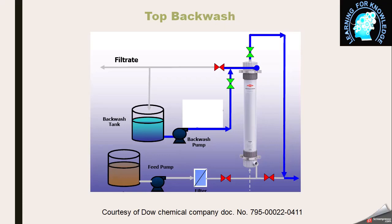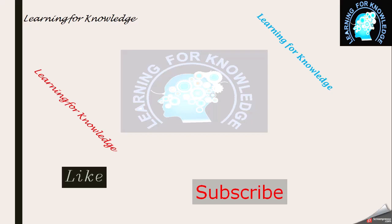These are the four different steps involved in UF filtration: first is normal filtration, then air scoring to clean impurities from the membrane, then top backwash and bottom backwash — in each backwash process water enters inside the membrane and comes out from the outside. Thank you for watching, and we will continue to provide knowledgeable videos in the future.